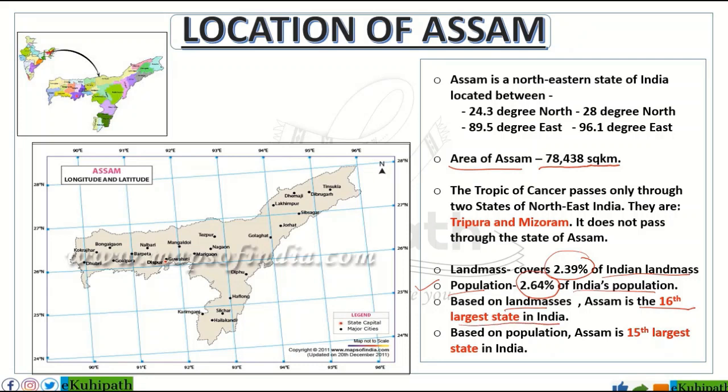On the basis of population, Assam covers around 2.64% of India's total population and ranks as the 15th largest state in India by population.